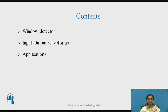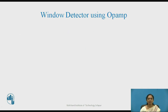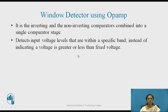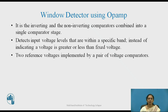As its name implies, a window detector gives detection of a range of voltage. It is a combination of inverting and non-inverting comparators, which are combined together to form a single comparator stage. These two stages are combined with the help of P-N junction diodes. It detects input voltages that are within a specified band, called the window. Instead of just comparing a voltage greater than or less than a fixed value, it shows you a range of voltage, and it has two reference voltages.